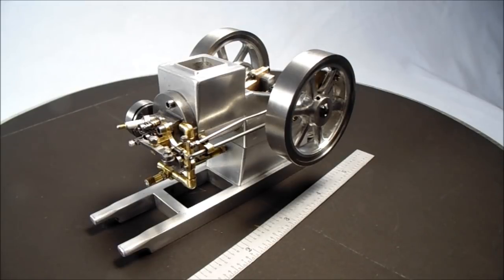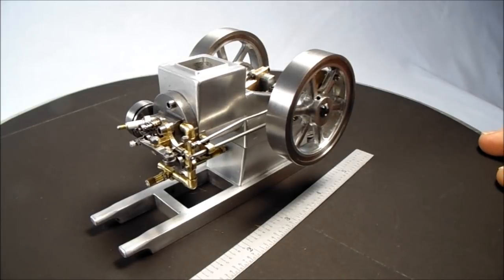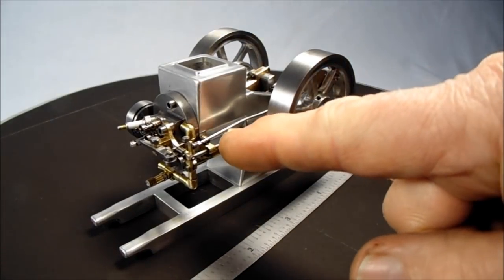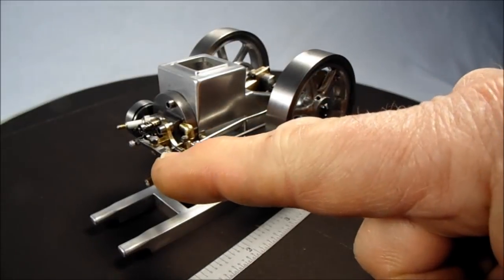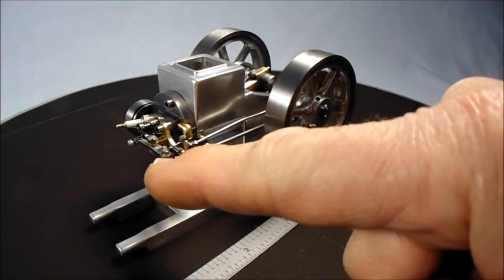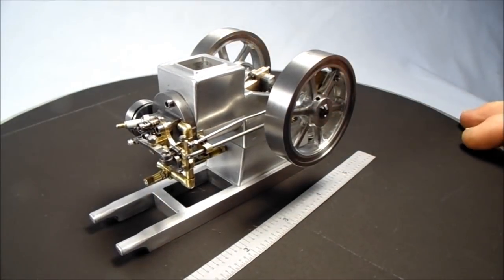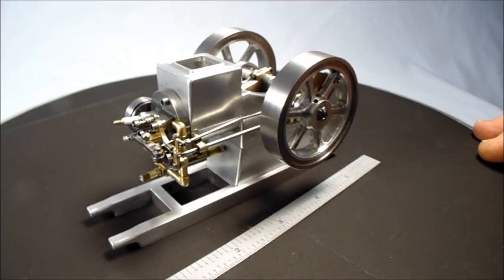The difference in this one is it's a side shaft version where the shaft runs up the side of the engine and operates the exhaust valve from the cam on the end of the shaft.